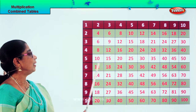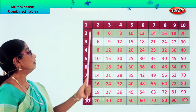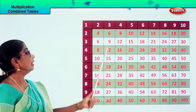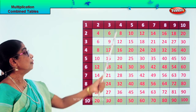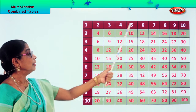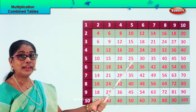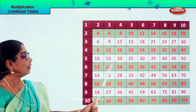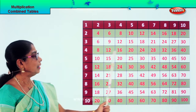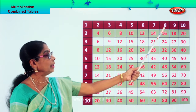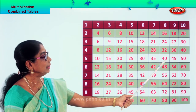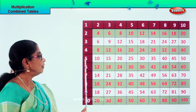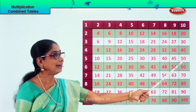Now you take the five this way: five ones are five, five twos are ten, five threes are fifteen, five fours are twenty, five fives are twenty-five, five sixes are thirty, five sevens are thirty-five, five eights are forty, five nines are forty-five, five tens are fifty.